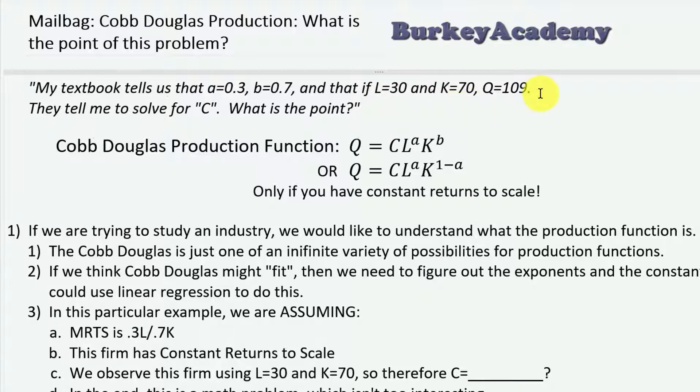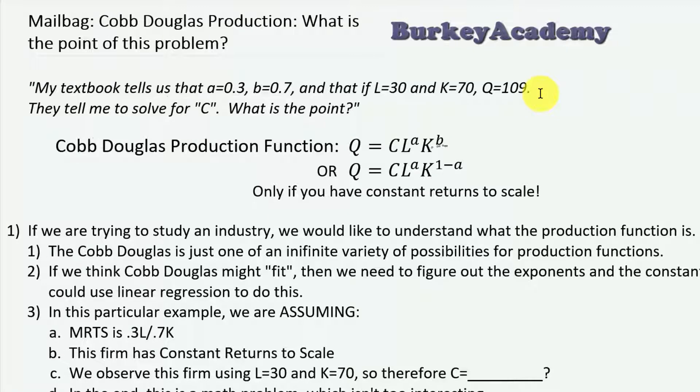The general way we would normally write a Cobb-Douglas production function is this: the amount of output Q is some constant times the amount of labor raised to the a times the amount of capital raised to the b. In general, a and b can be any number, normally positive, and it's important that we don't restrict a and b in general for a Cobb-Douglas production function.